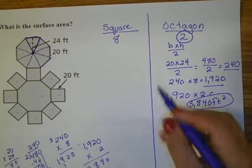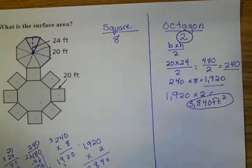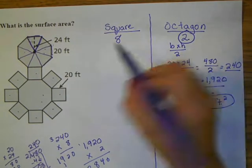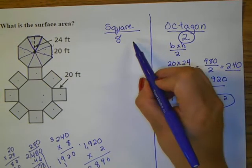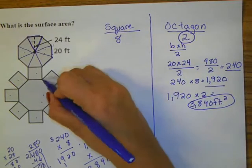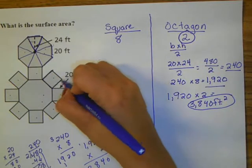And I get 3840. Label my answer: square feet. That is how much the surface area is for both of my octagons.